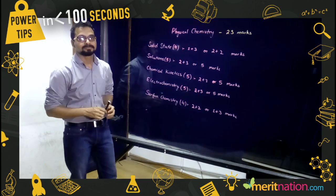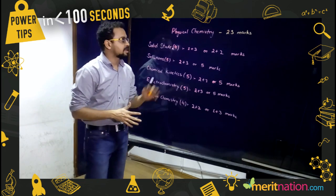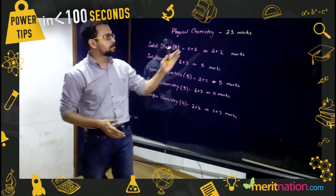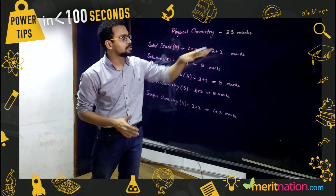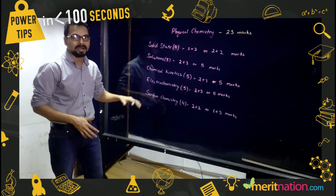Kunal sir, what are the important topics from physical chemistry? Physical chemistry generally accommodates 23 marks of the board examination, and this is the basic distribution of marks in the different chapters.